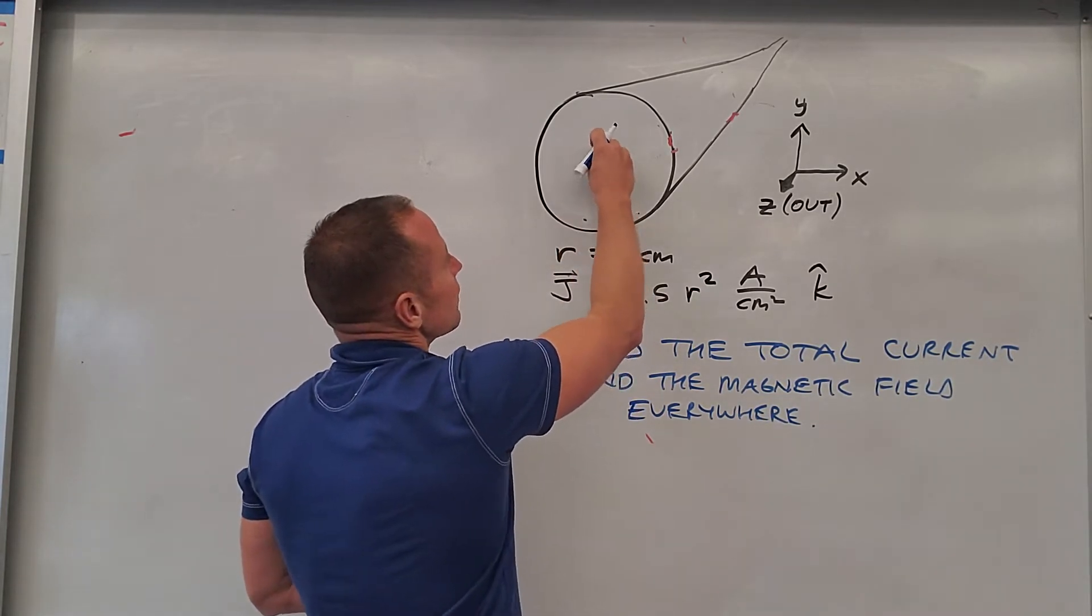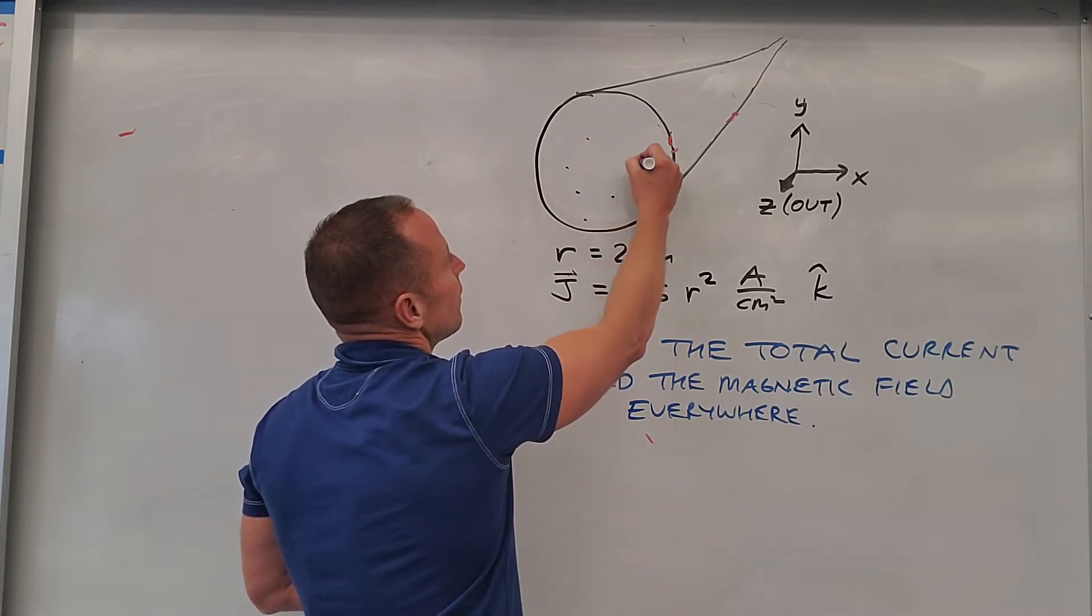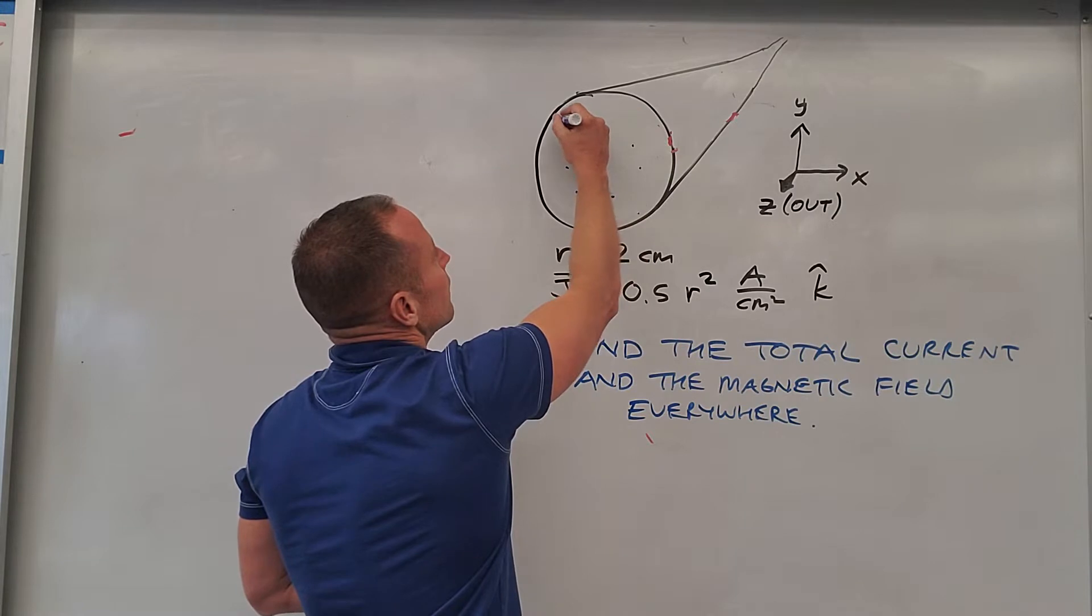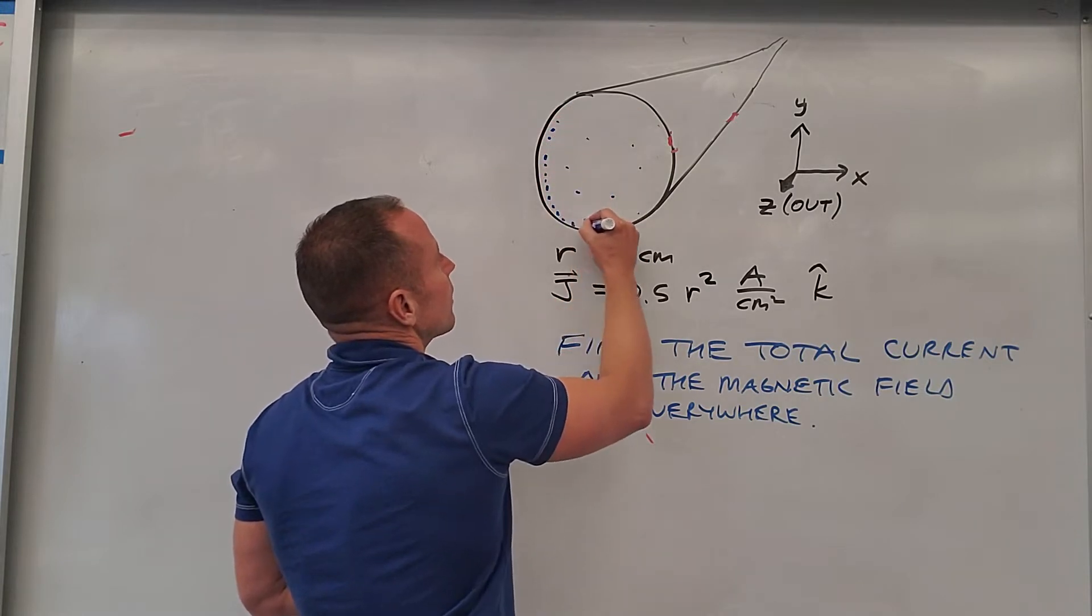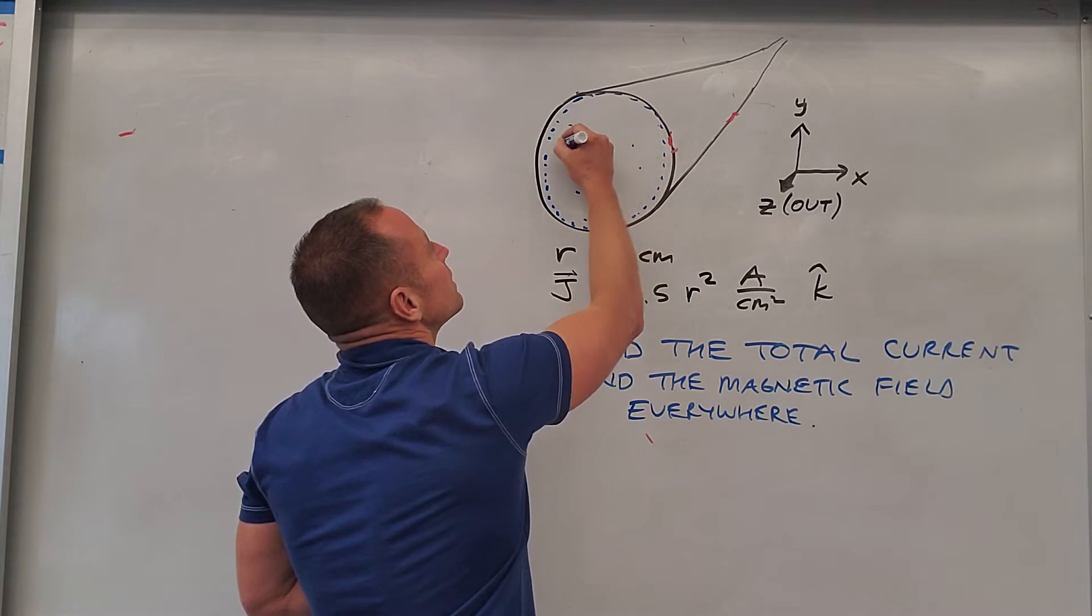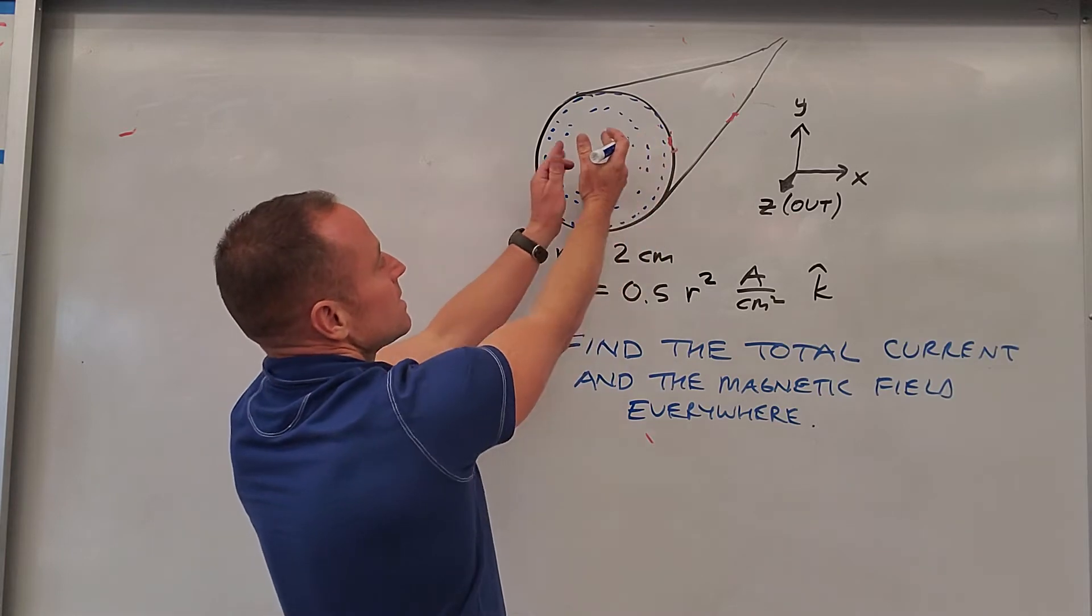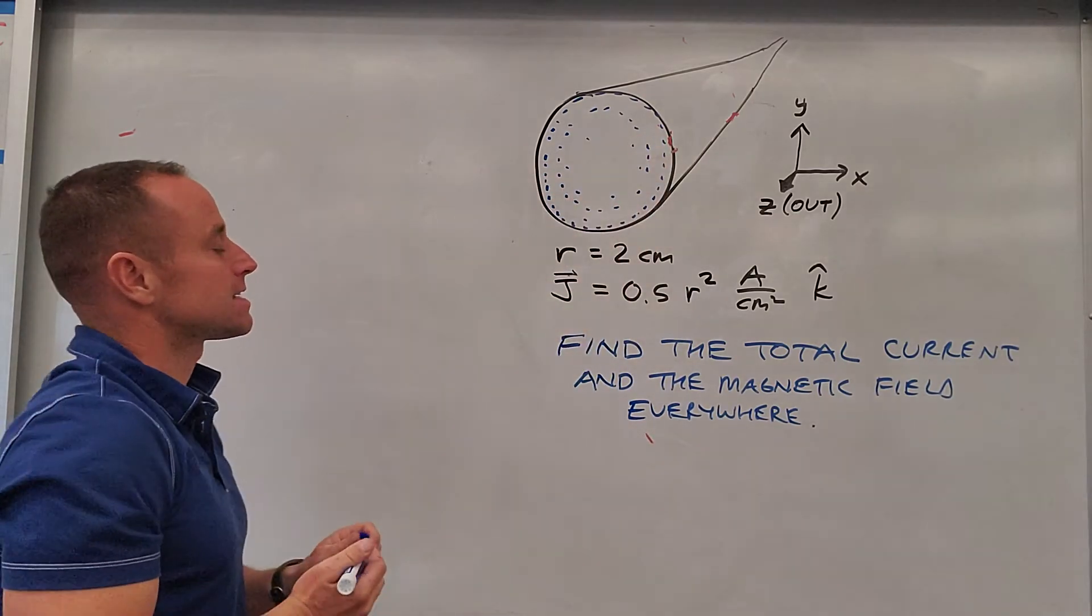So what that means is in the middle there's hardly any current, and then as you get a little bit farther out, there's more and more and more current. So it's kind of like there's a whole lot out at the outer skin, and then as you move in toward the middle, there's less and less until you get to zero in the dead center.